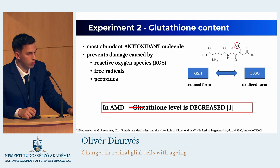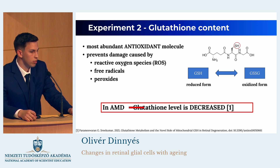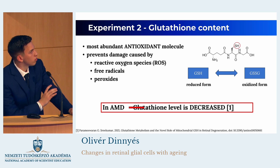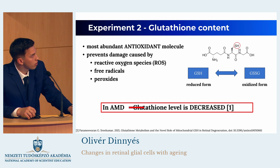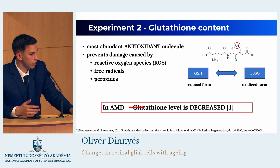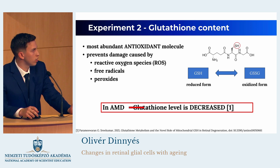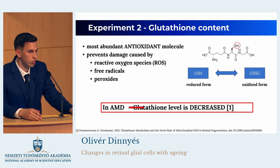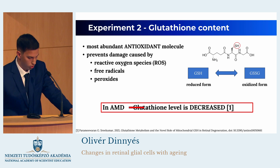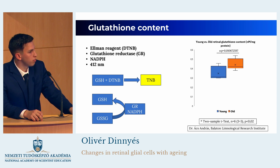I was also interested in the ability to react to oxidative stress, so the glutathione content was measured in the samples. Glutathione is the most important antioxidant in the retina. Here the molecule can be seen, and the thiol group on the cysteine amino acid is responsible for its antioxidant role. It has two main forms — reduced and oxidized — and can be measured in different ways. Multiple studies show that in AMD the glutathione content is decreased, so I was interested in how glutathione content changes in my samples under physiological conditions. For this, I used spectrophotometry.